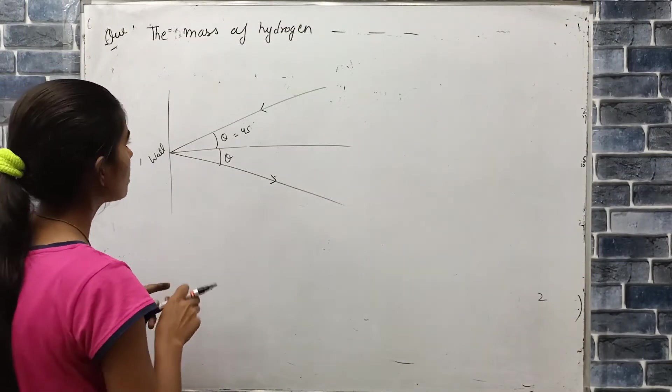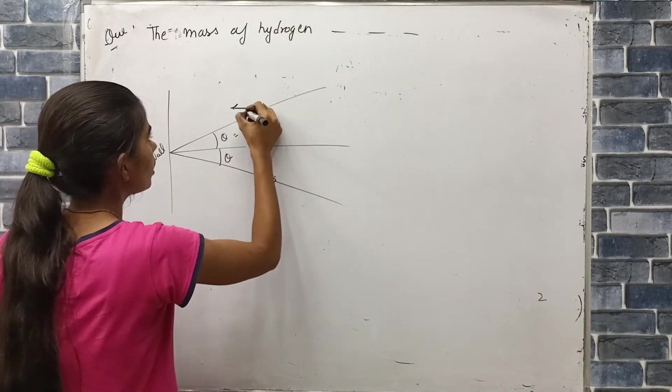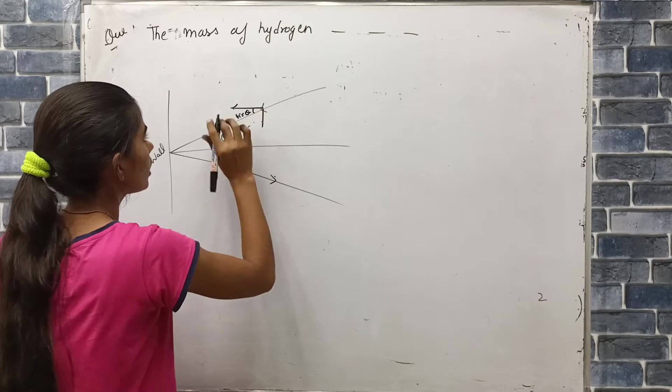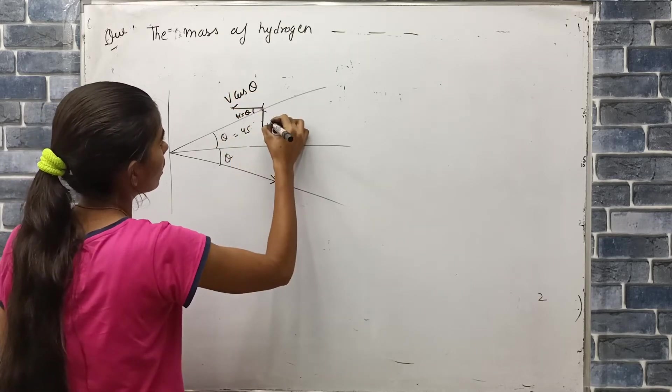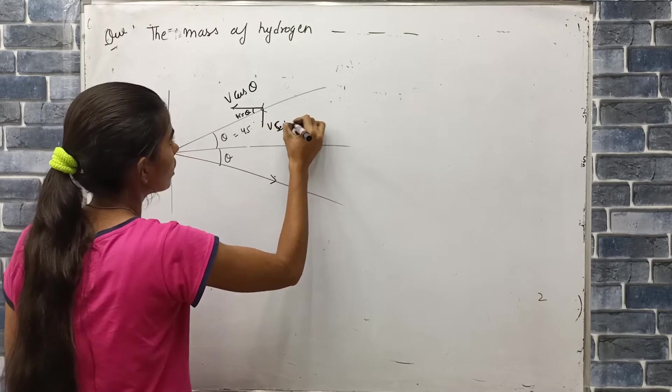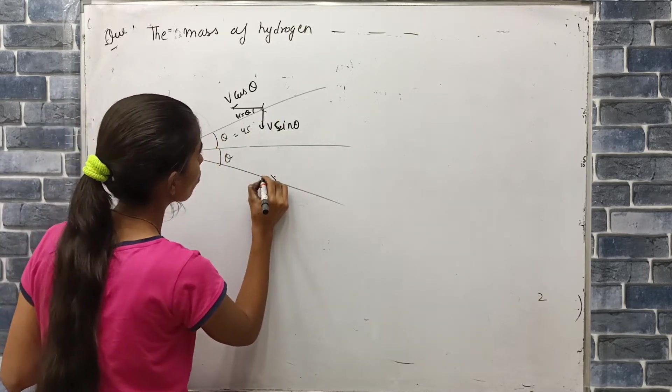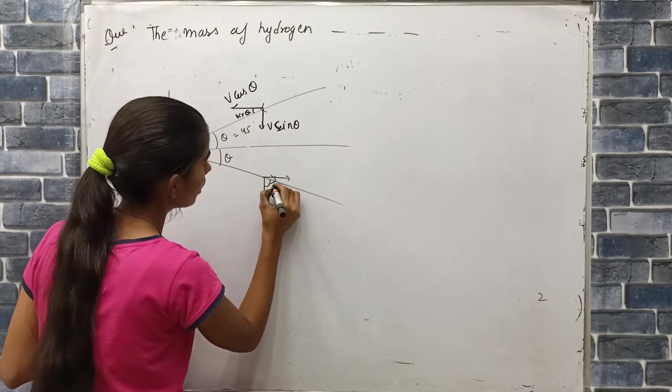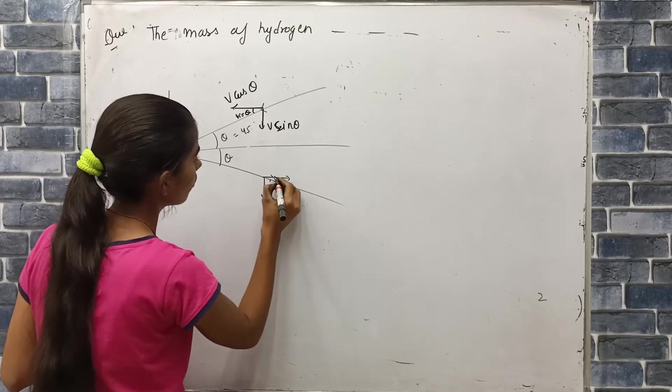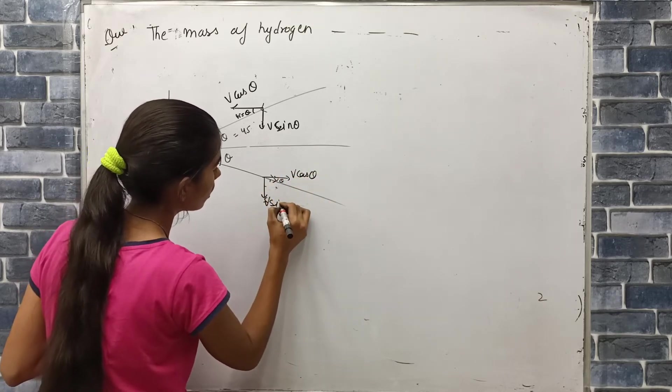What happens in this case? If we take a component of this, the angle is theta. What happens? We have V cos theta and V sin theta. We have two components.